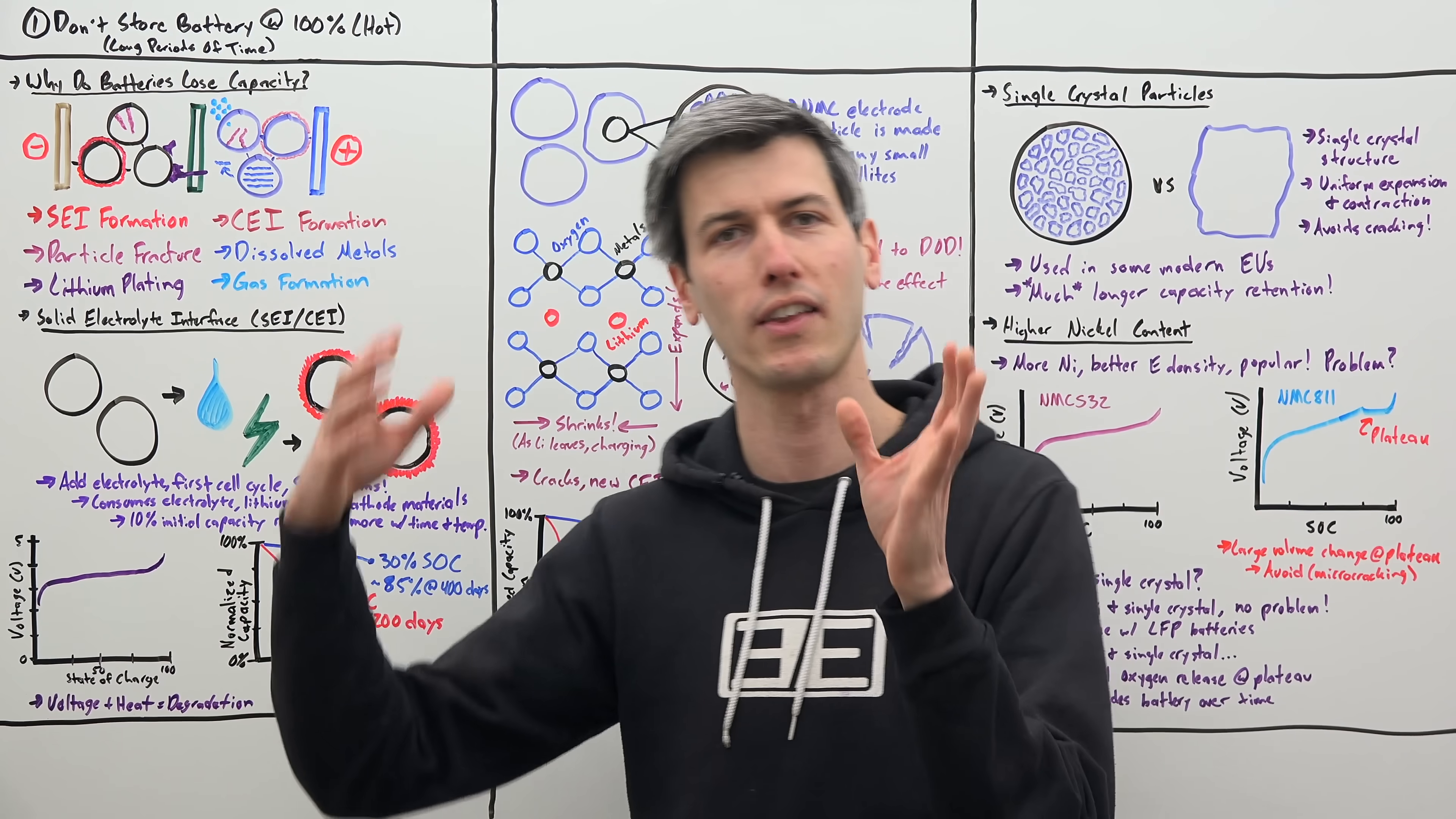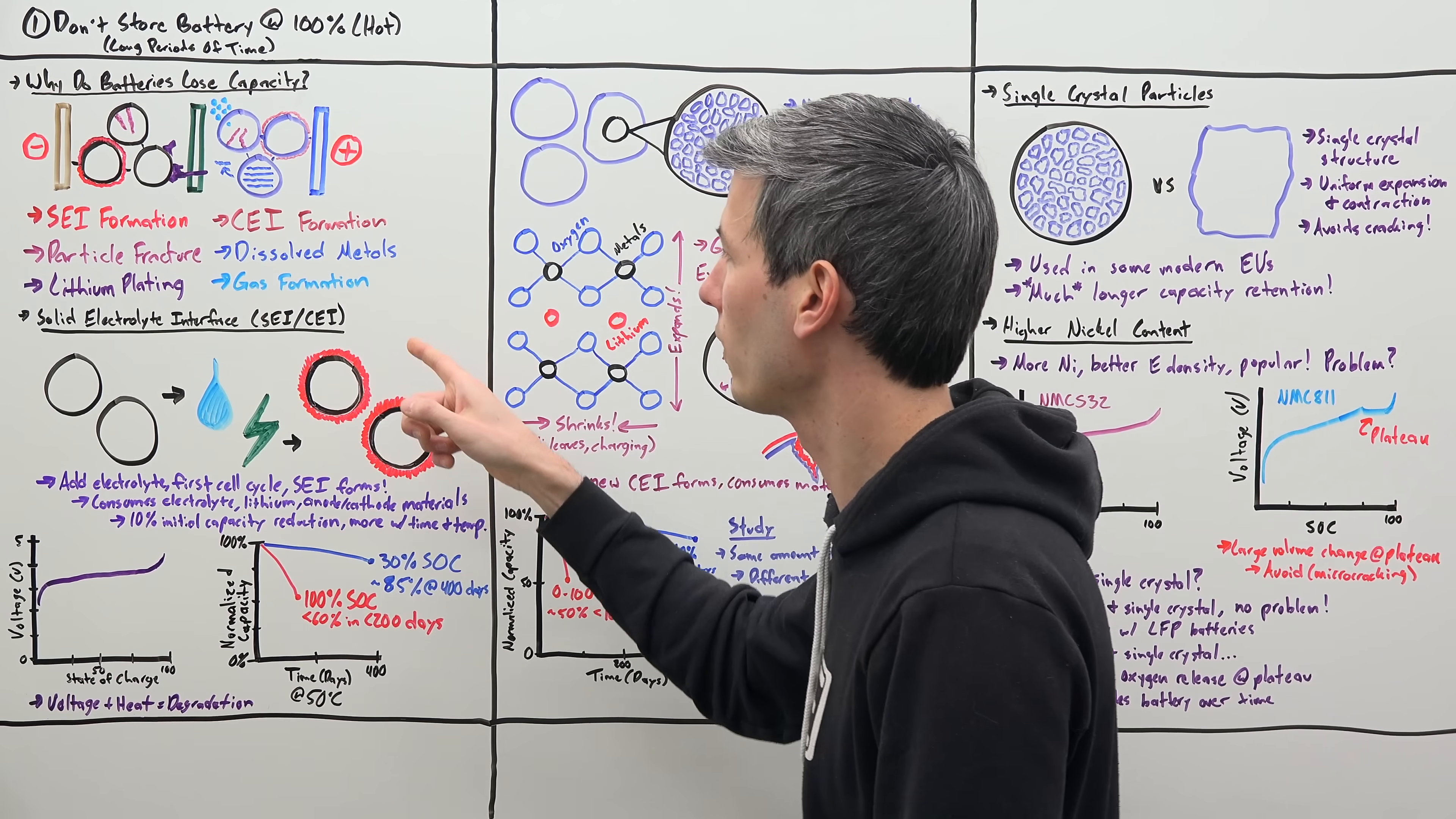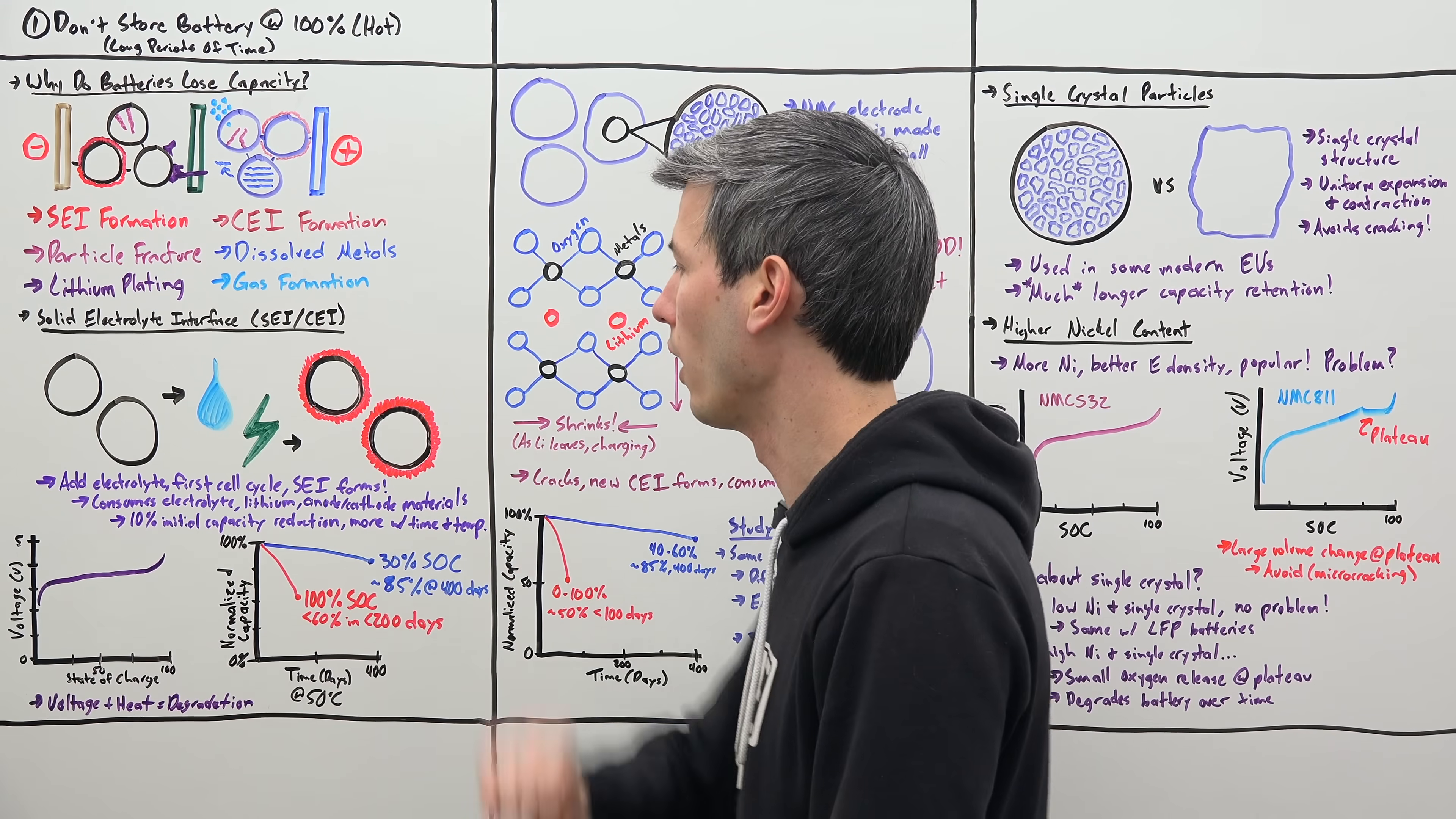Now, you as a consumer never see this because this is done at the factory long before you ever get a product using this battery, but it is worth mentioning because this continues to grow. And so as long as this electrolyte interface continues to grow and consume other materials, it means it's taking away from the usefulness of your battery.